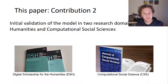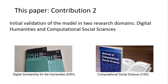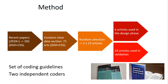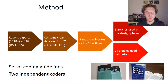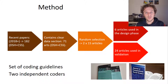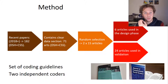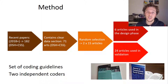The second contribution of this work is a preliminary and limited validation of the model in two research domains. We looked at two journals — one for digital humanities and one for computational social science. We selected recent papers from 2018 that contained a clear data section, then randomly selected two times 15 articles, of which six were used for building the model and 24 for validation — 12 for each journal.